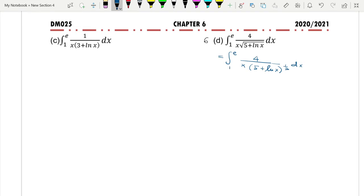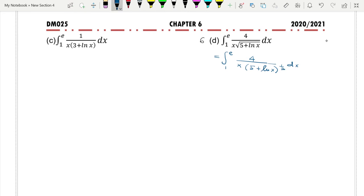Now we have 4/x times (5 + ln x)^(1/2). Since this is not one term, we need to use the substitution method.